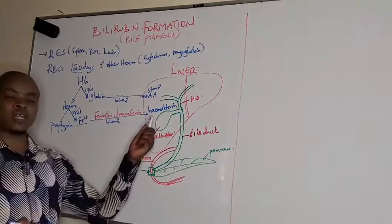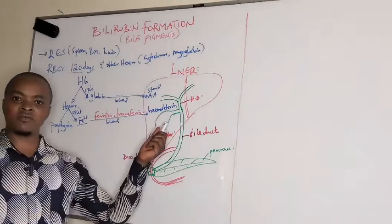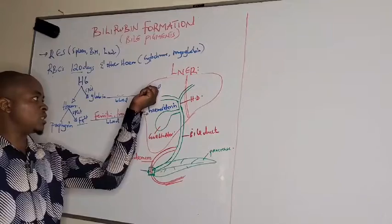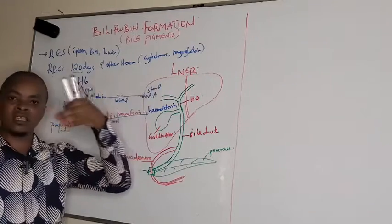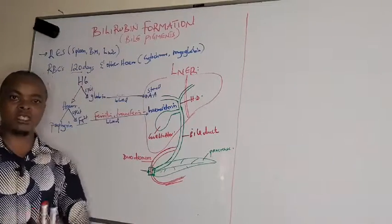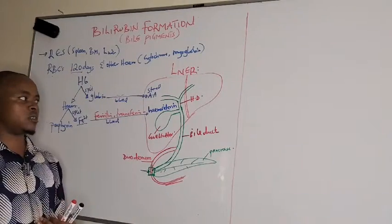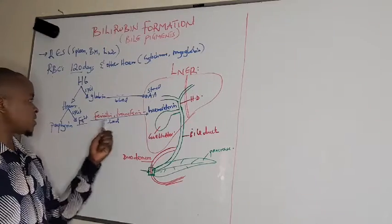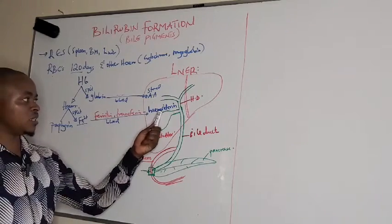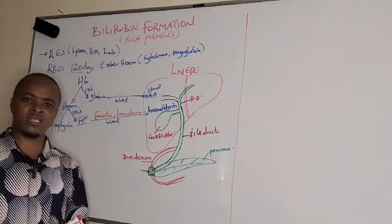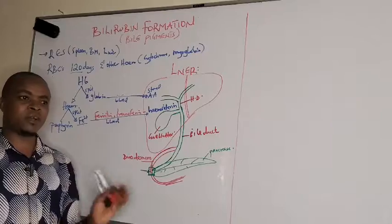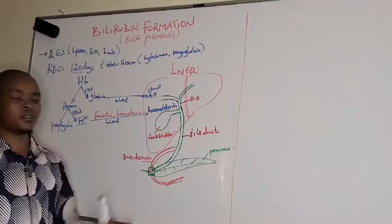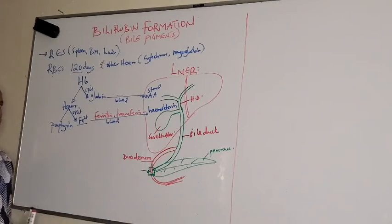So that in case we need more red cells, we can reuse these stores — God does not believe in waste. The amino acids are kept in the liver for reuse, and even the iron is kept as hemosiderin so that when we need more red cells, the bone marrow can reuse this iron.